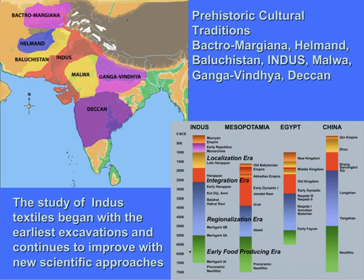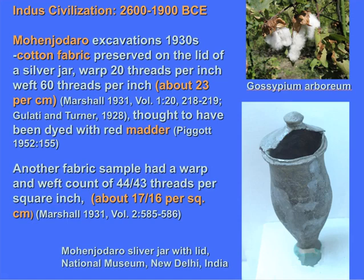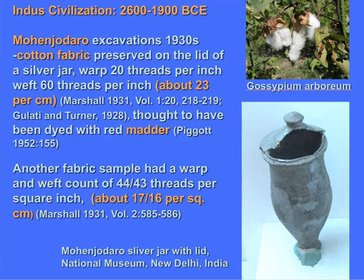The study of Indus textiles began with the very earliest excavations, starting around the 1930s, and it continues to improve with new scientific approaches. One of the earliest discoveries of textiles was from the site of Mohenjo-Daro, whose urban phase dates from about 2600 to 1900 BC. A silver jar had traces of fiber on the lid, which allowed people to determine the weave count and size. At that time, they thought they could identify red matter as a possible dye for this textile. Other fabrics were found as well, but this textile was identified as cotton.